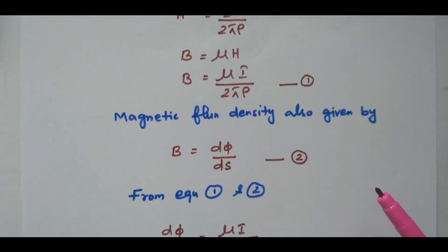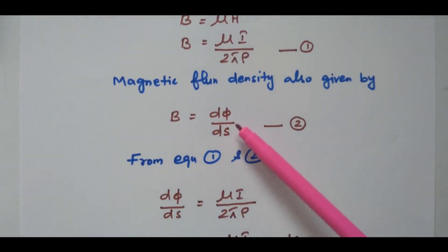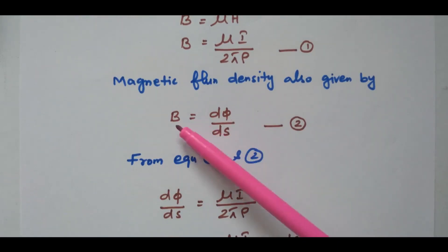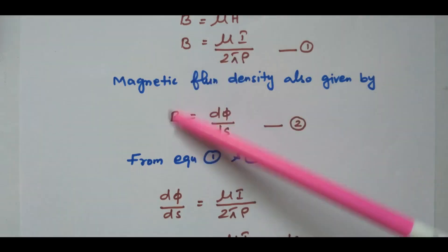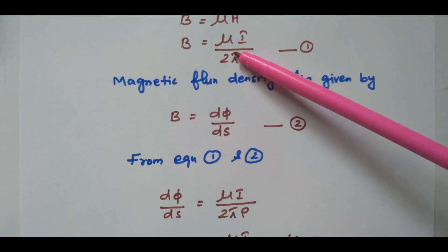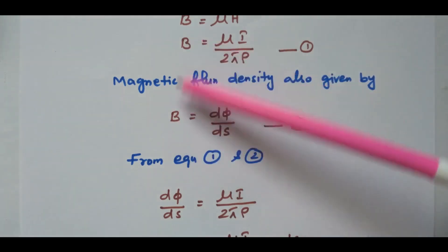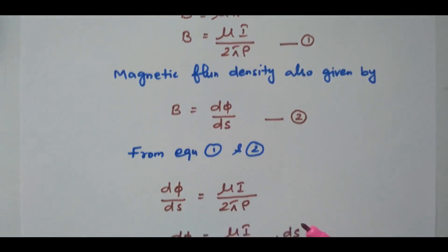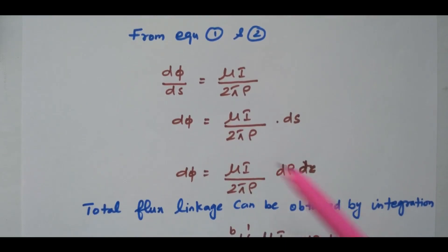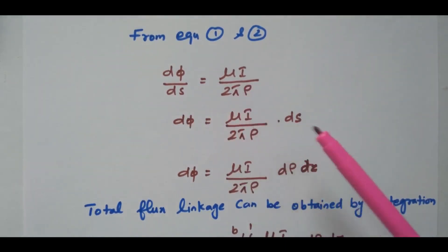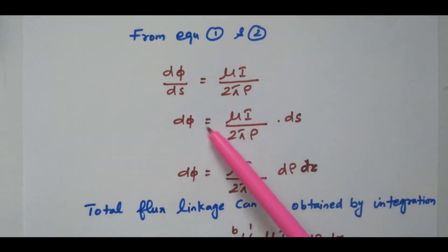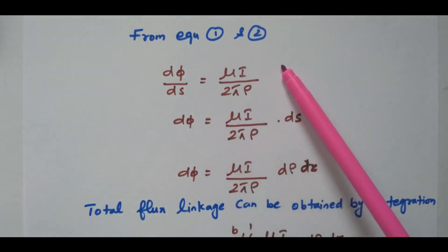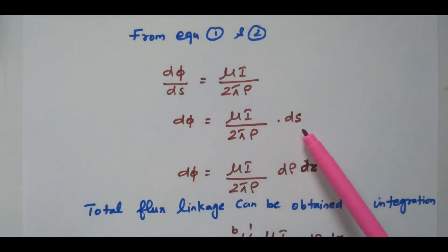In general, the magnetic flux density is given as dπ/dS — that is flux per unit area. This is equation number 2. Since both left-hand sides are equal, we can equate the right-hand sides. From equations 1 and 2: dπ/dS = μI/(2πρ). From that, dπ = μI/(2πρ) · dS.